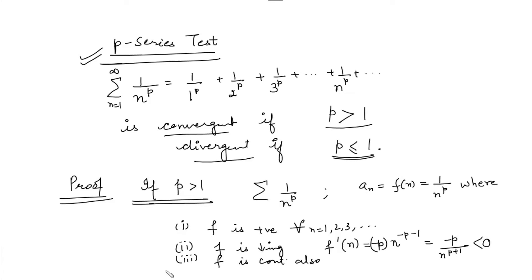So all three conditions of the integral test — positive, continuous, and decreasing — are satisfied. Therefore we can apply the integral test to check the behavior of the series 1 over n to the power P for P greater than 1.